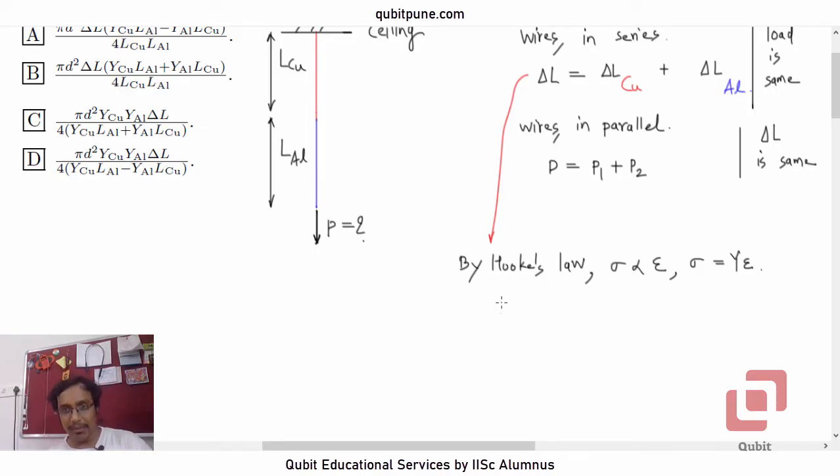Sigma could either be tensile or compressive stress. It's P by A, force upon area. Y is tensile or compressive strain, delta L by L. We are concerned with delta L, which will be P L by A Y.